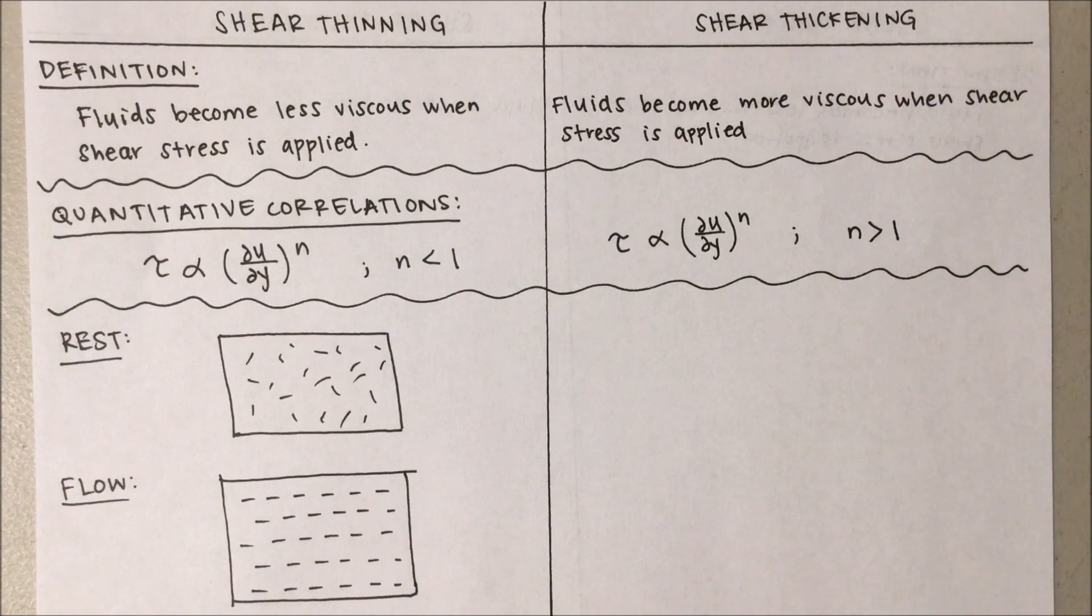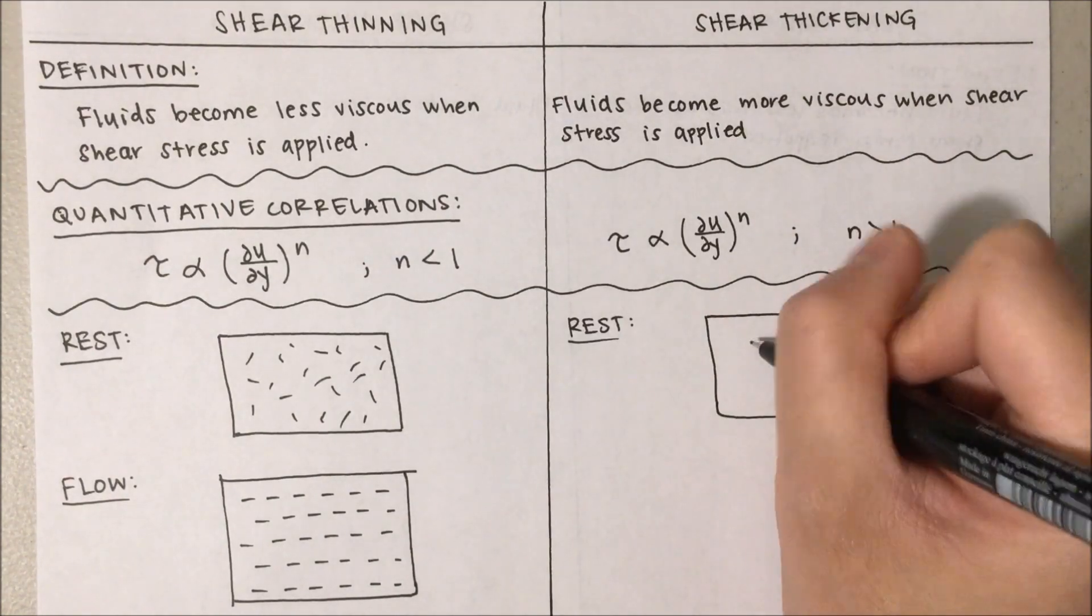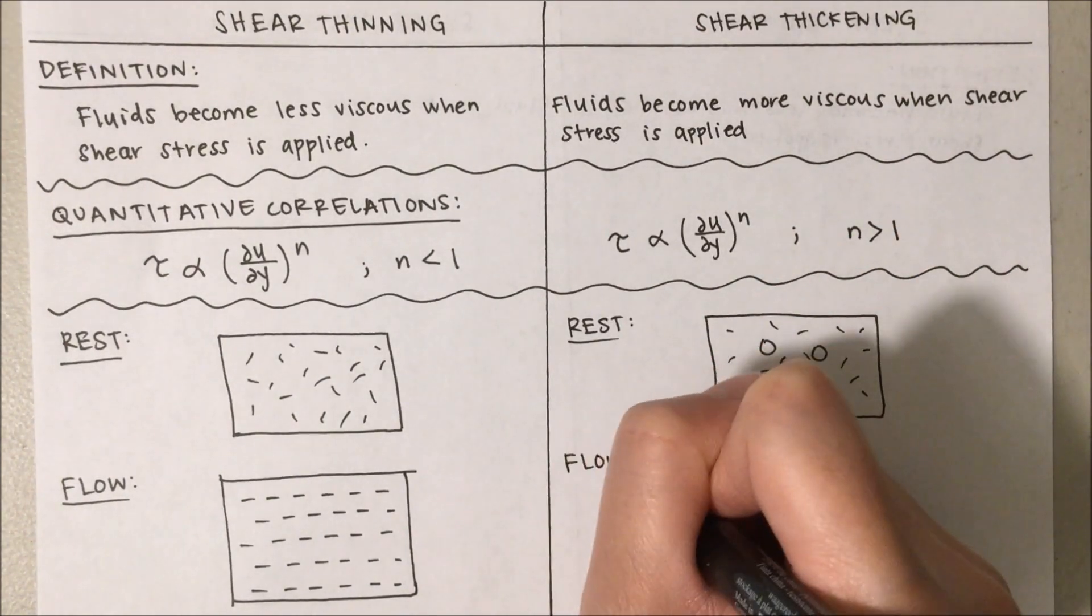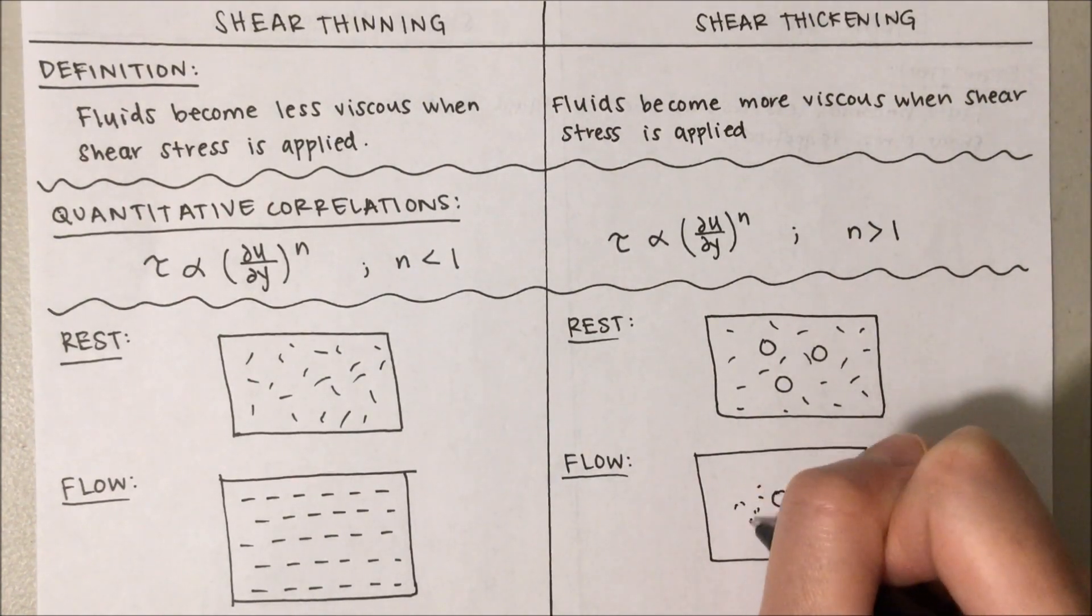For shear thickening fluids, the particles would randomly scatter with little intermolecular interaction when at rest, and once they start to flow, the particles would disorder themselves in a more compact way, that is thermodynamically favored.